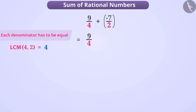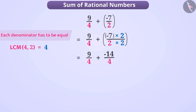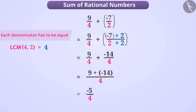The denominator of 9 by 4 is already 4, so we will not make any change in it. But it is not 4 in the case of minus 7 by 2. To do so, we multiply the numerator minus 7 by 2 and the denominator by 2. This gives us the rational number minus 14 by 4. The value of the rational number is not changing because both the numerator and denominator of minus 7 by 2 are multiplied by the same number. Now we can add them — we write the common denominator 4 in the result and sum the numerators: 9 plus minus 14 is equal to minus 5.